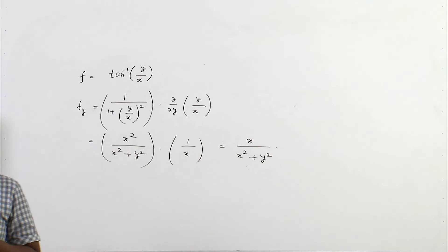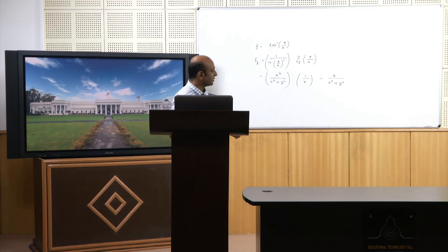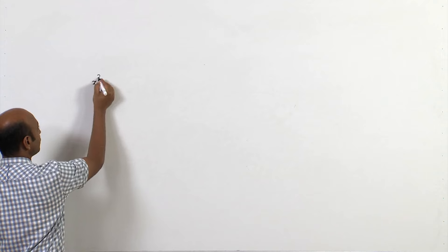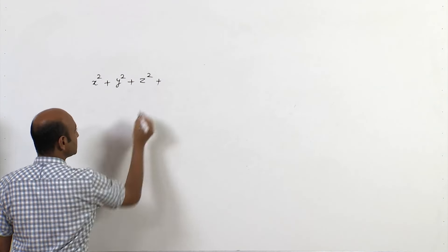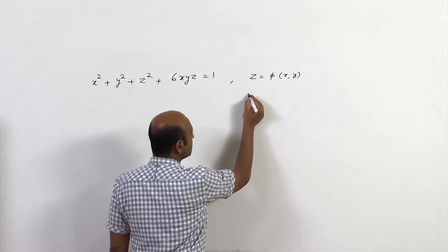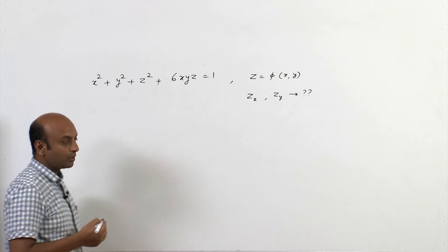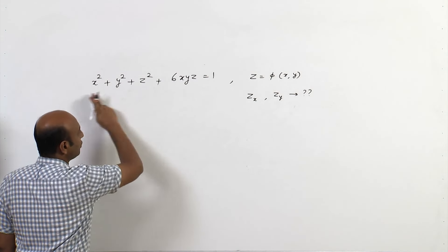Now let us solve another problem: find zₓ and z_y if the equation x² + y² + z² + 6xyz = 1 defines z as a function of the two independent variables x and y. To find zₓ, we differentiate the equation partially with respect to x.